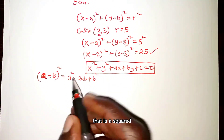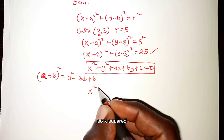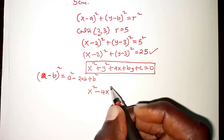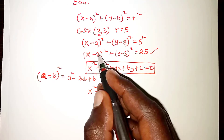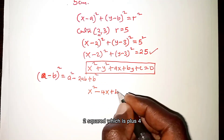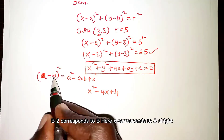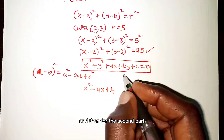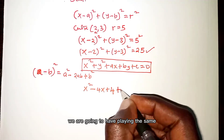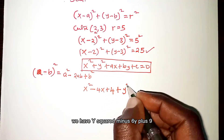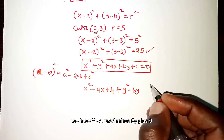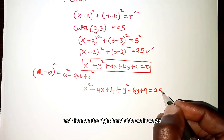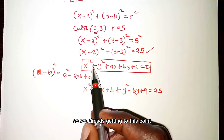Expanding (x minus 2) squared using the identity: x squared minus 2 times x times 2, which is 4x, plus 2 squared, which is 4. Here x corresponds to A and 2 corresponds to B. For the second bracket, (y minus 3) squared, we get y squared minus 6y plus 9.